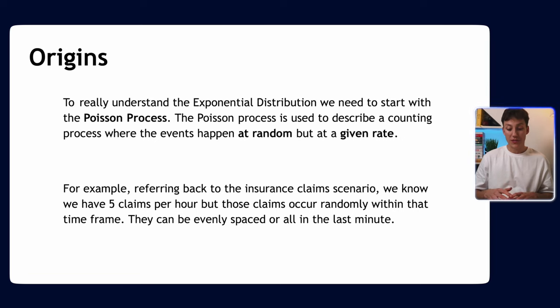Going back to our claims example, we may know that we get five claims per hour, but we don't know when those five claims are going to happen. They may happen right at the beginning, at the end, or spread out evenly. The point is we know the rate but not when they happen—that's a Poisson process.